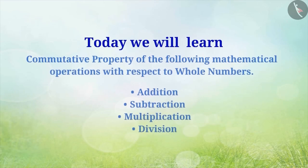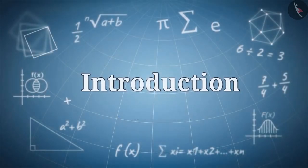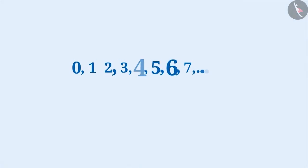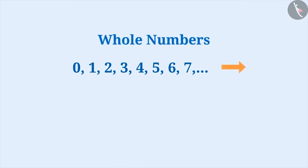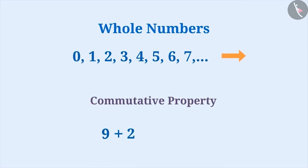Today we will learn the commutative property of mathematical operations with respect to whole numbers. We know that all numbers from 0 to infinity are called whole numbers. Commutative property allows a mathematical operation to be solved by changing the order of the numbers. Let's understand in detail.